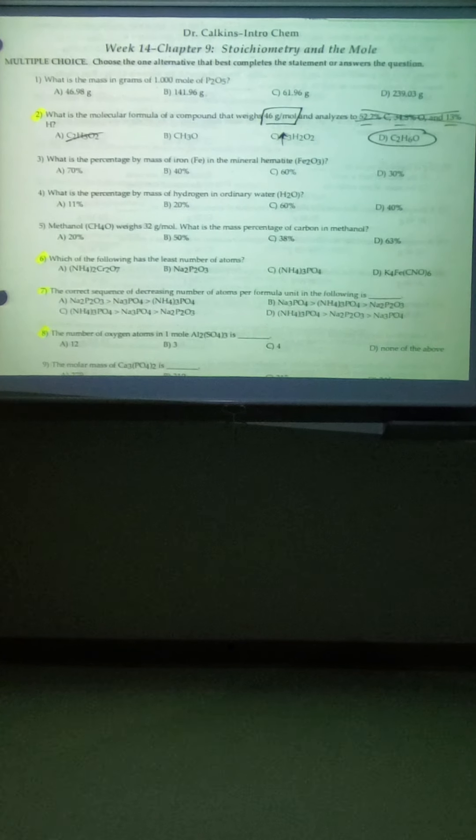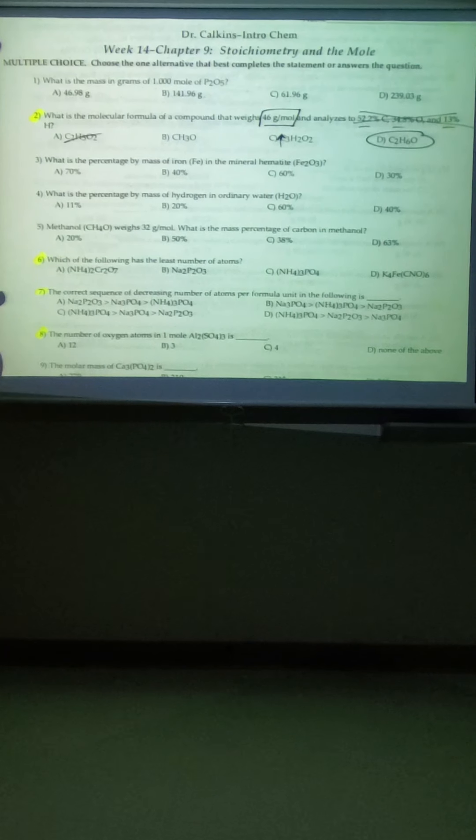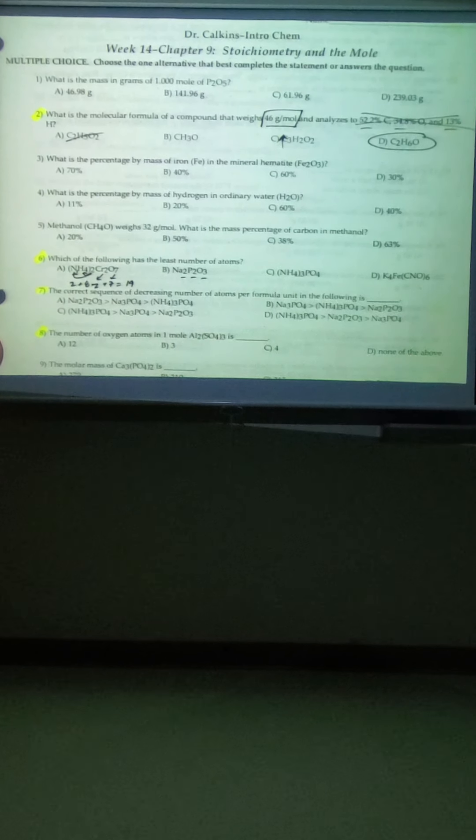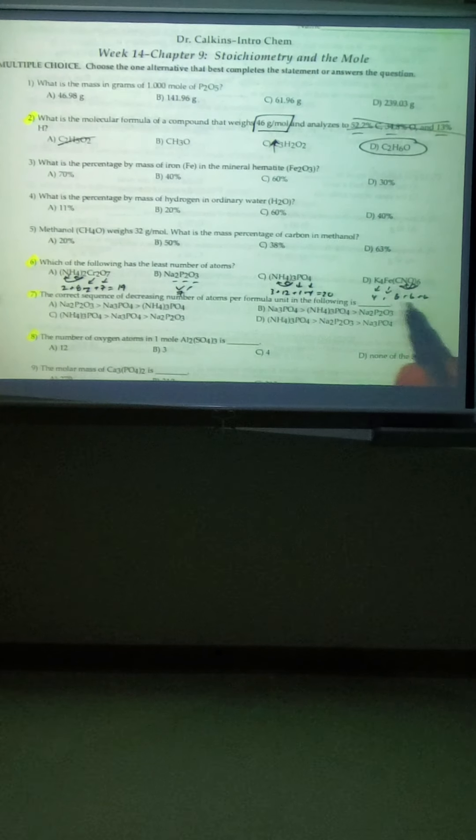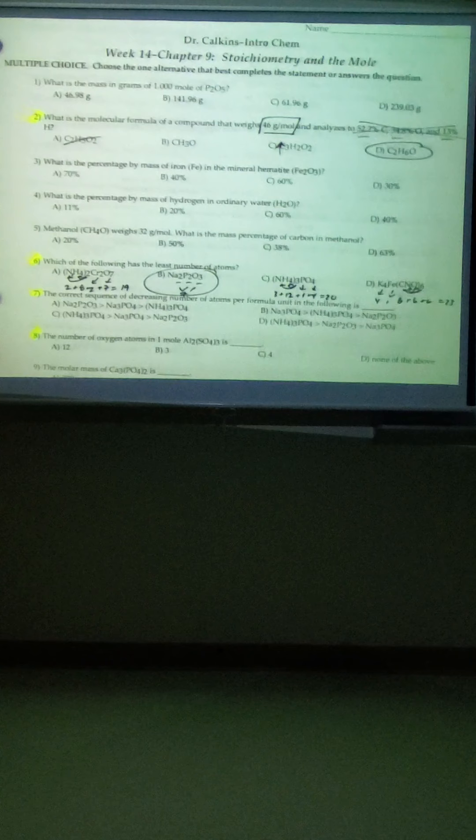Number 6 talks about the least number of atoms, so we're just looking at the subscripts. Make sure you multiply across. Here we have 2 times 1 = 2, 2 times 4 = 8, 2 for chromium, and 7 for oxygen — that's 19 total. Another compound gives 7 atoms: 2 plus 2 plus 3. Another gives 20 atoms: 3 phosphorus, 12 oxygen, and 1 more for phosphorus plus 4 more for oxygen. The least number definitely has only 7 atoms.